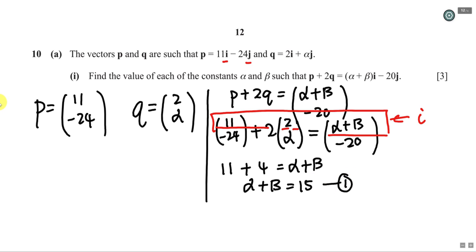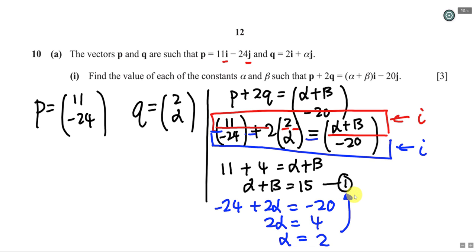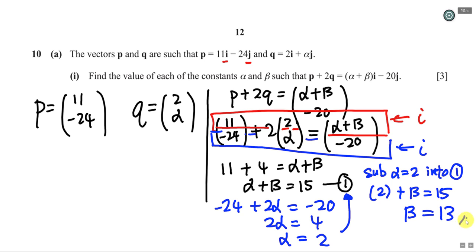Then I compare the second row (j-components): -24 + 2α = -20. So 2α = -20 + 24 = 4, giving α = 2. Once I have α = 2, I substitute back into equation 1: 2 + β = 15, so β = 13. This gets you the 3 marks — just substitute p and q into the equation and compare the i and j components.